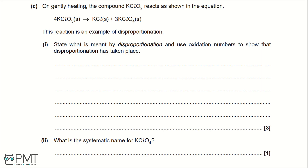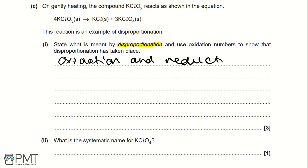Part C: on gently heating, the compound KClO₃ reacts as shown in the equation. This reaction is an example of disproportionation. Part one: state what is meant by disproportionation. Disproportionation is where oxidation and reduction occur simultaneously of the same element.